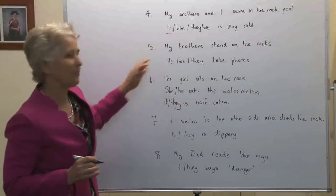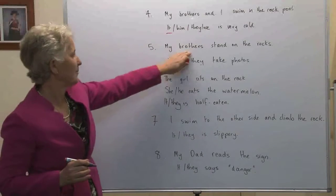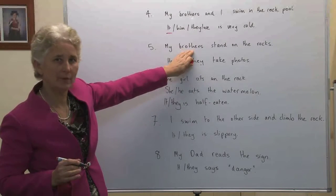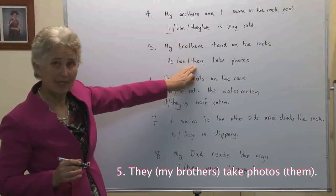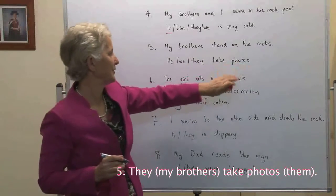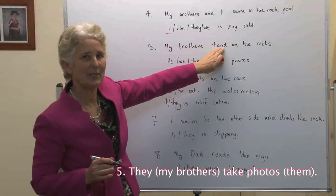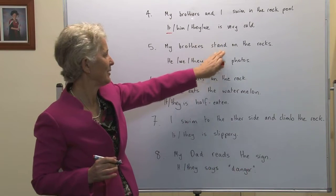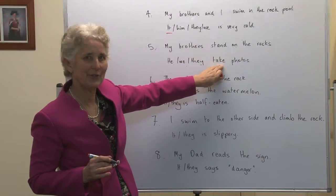Number five: My brothers stand on the rocks. My brothers — he, we, or they? My brothers is plural, third person, subject. We need they take photos. Notice there is no s because it is in the third person plural, simple present tense. My brothers stand. They take photos.